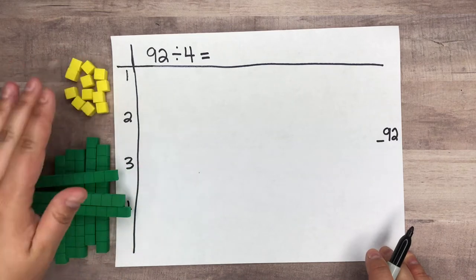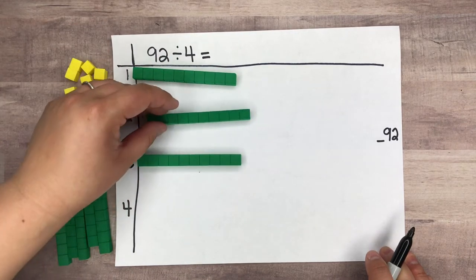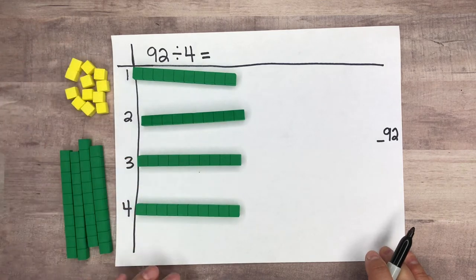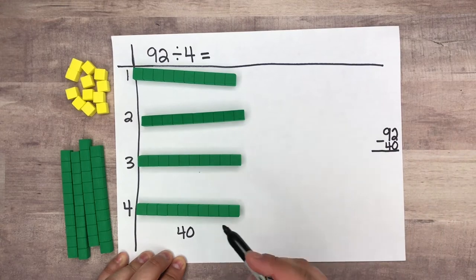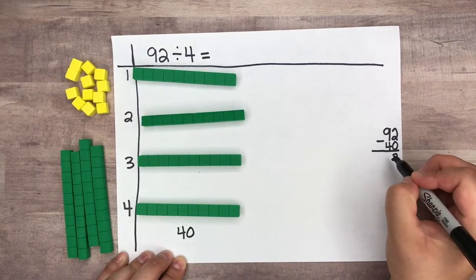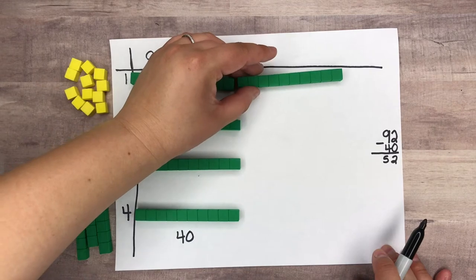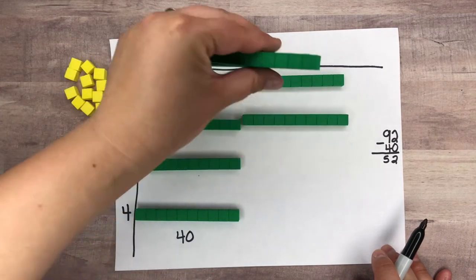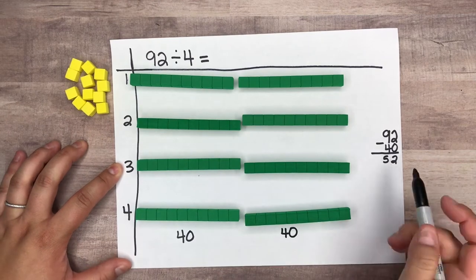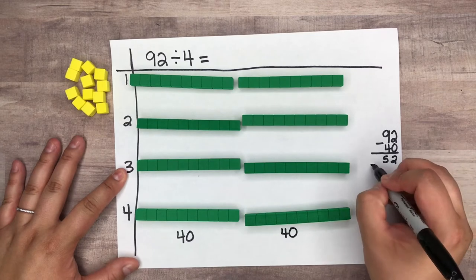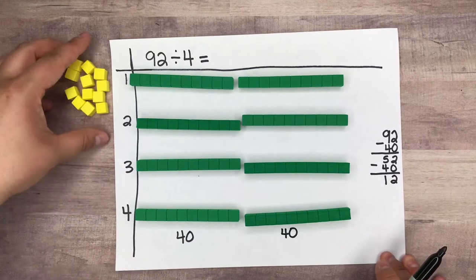Let's start with 92 and I'll subtract my tens as I lay them out. I'm going to divide out 10, 20, 30, and 40. I took out 40, so 92 minus 40 leaves me with 52. Now let me divide out the tens from my 52: another 10, 20, 30, and 40. I've taken out 40 more. 52 minus 40 leaves me with 12, so now I have 12 left over.